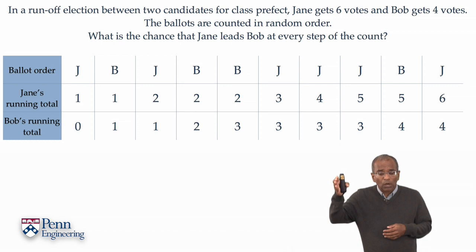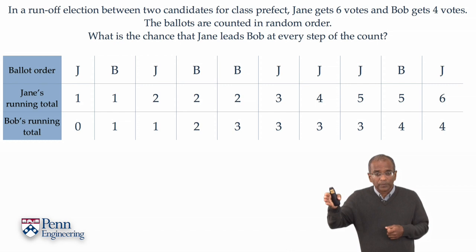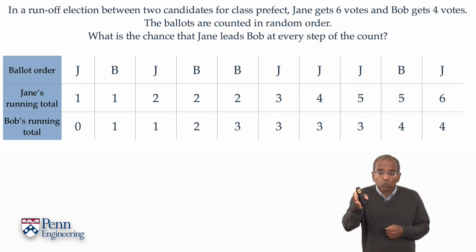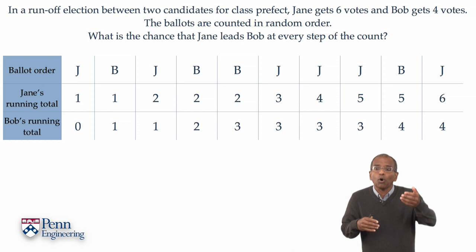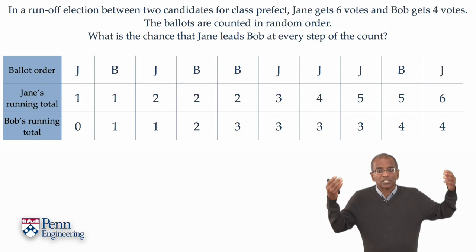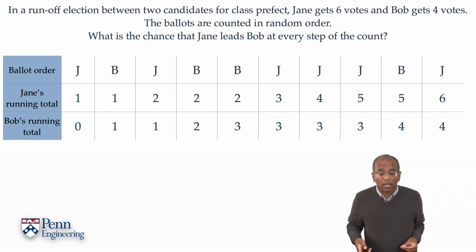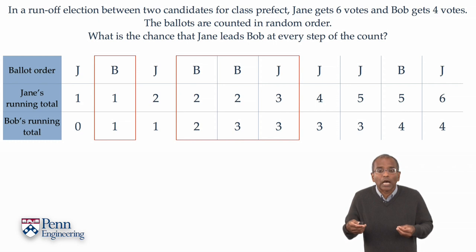Let's start a running count. With the first ballot cast, Jane's count is one, Bob's is zero. With the second ballot cast, Bob picks up a vote — Jane is one, Bob is one. With the third ballot cast for Jane, Jane is now two, Bob is still one. By the time the tenth ballot is cast, Jane has accumulated six and Bob four. In this particular example, Bob has managed to draw even with or even surpass Jane's count at several places, though he ultimately loses the election.